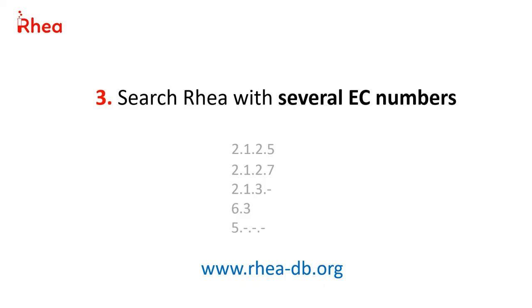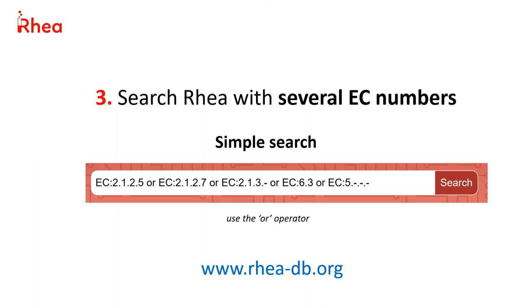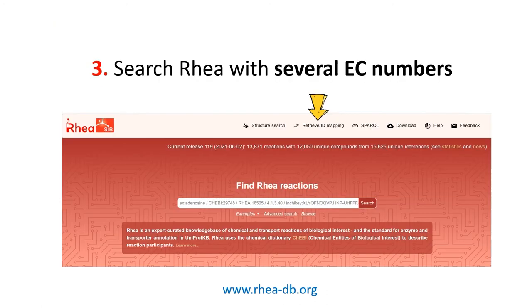We can search RIA with several EC numbers at a time. To do so, we can use the simple search box and combine our EC numbers with the OR operator. However, if we have more than just a few EC numbers for which we'd like to obtain the corresponding RIA reactions, it will be more convenient to use the ID mapping service.